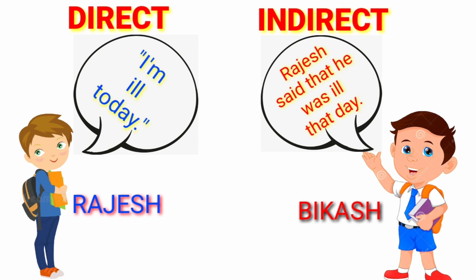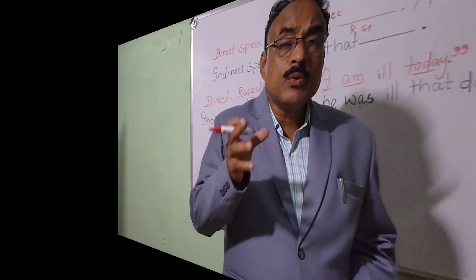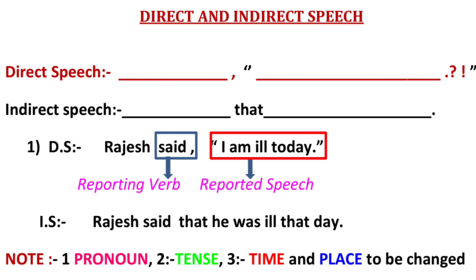Let us look at the examples now. You have to follow some certain rules so that the language is used properly. So, how many changes are there? First, pronouns; then tense; then time and places. So they have a vital role in indirect speech. Let us discuss one by one.